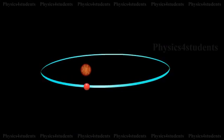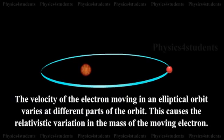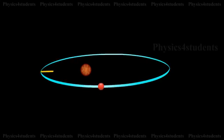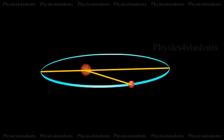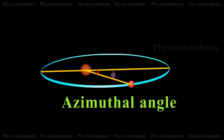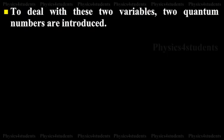When the electron revolves in an elliptical orbital, it has two components: first, the distance from the nucleus, which keeps on varying; and second, the angle φ with respect to the axis. φ is the angle between the electron and the major axis. As the electron moves, both the angle and distance change. We will now see some important equations to deal with these two variables.